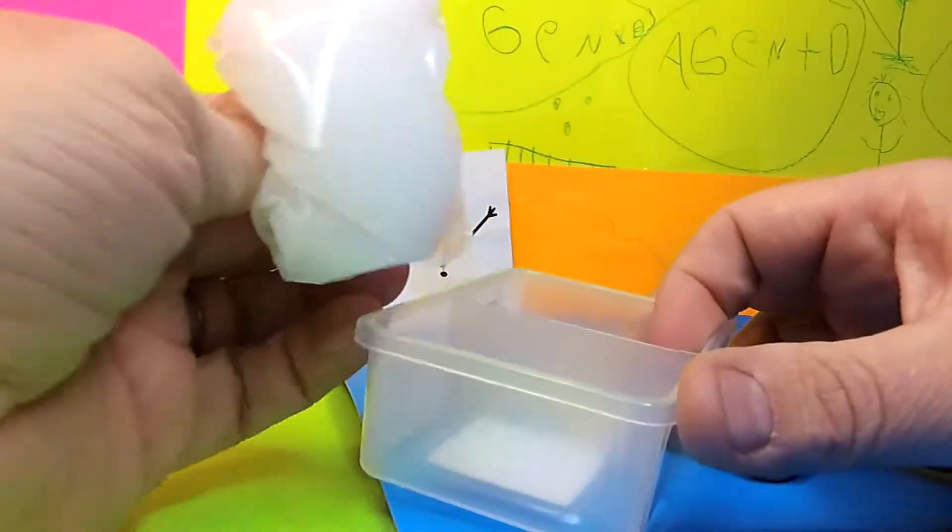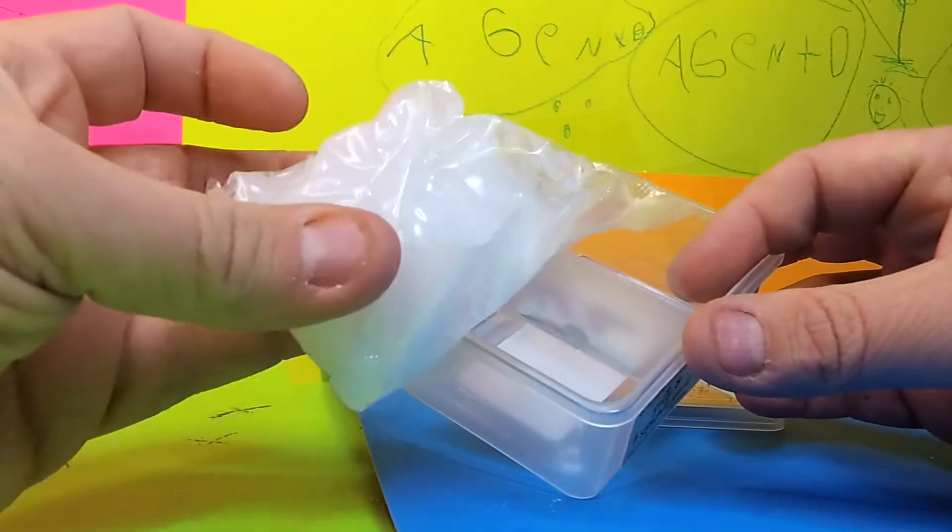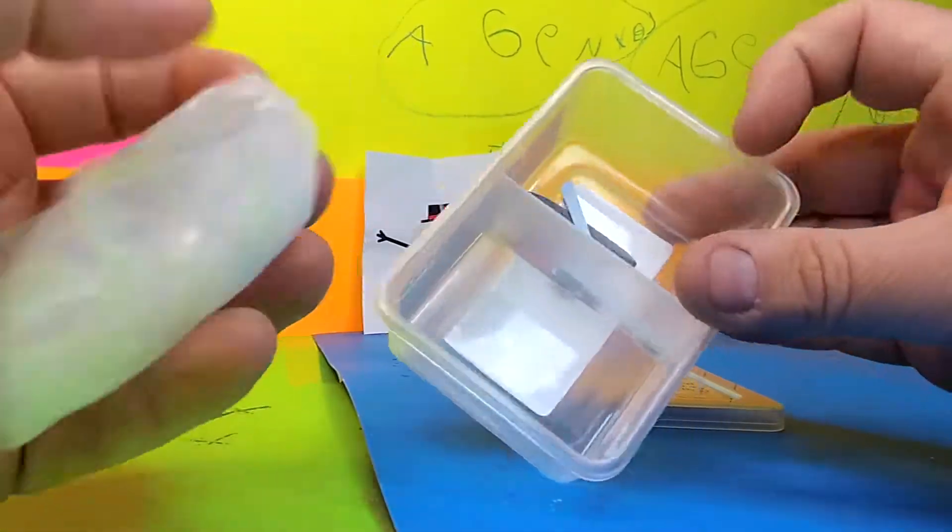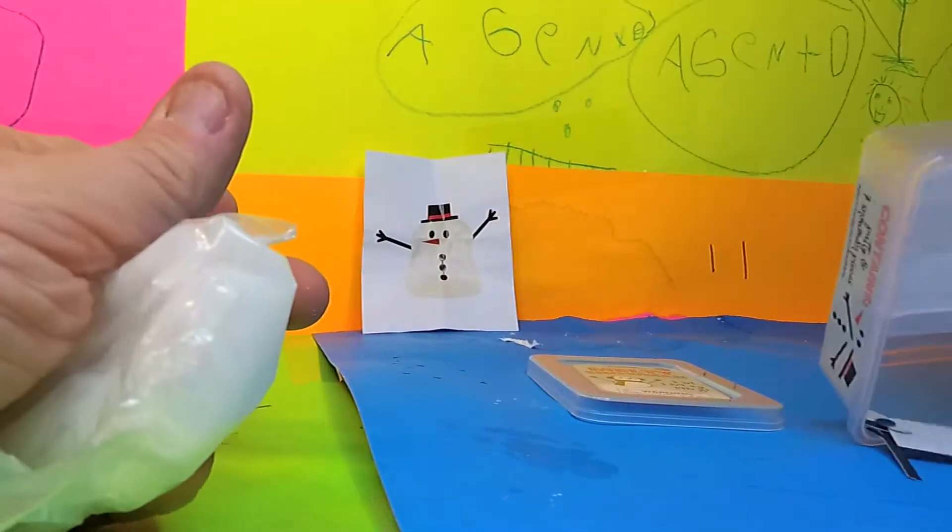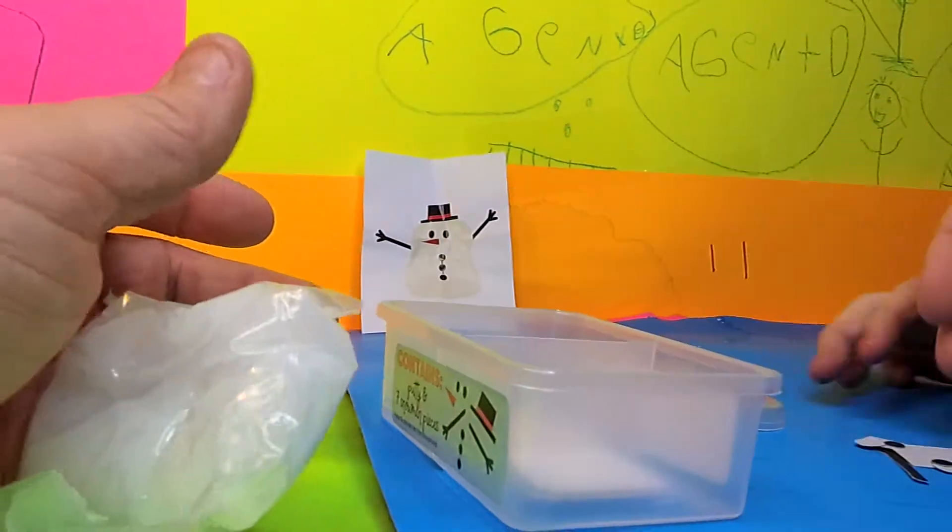And then we got the snowman gunk. This is like a putty. And then here we have a whole bunch of snowman parts. So you guys need to pick out what you're going to put on.